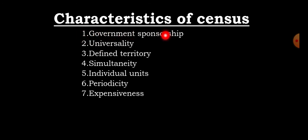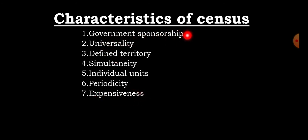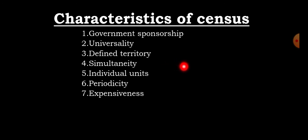What are the characteristics of population census? Population census is characterized by seven basic characteristics. The first is government sponsorship — it is sponsored and funded by the government. Second, it is universal. Third, it is conducted within a defined territory of one country.